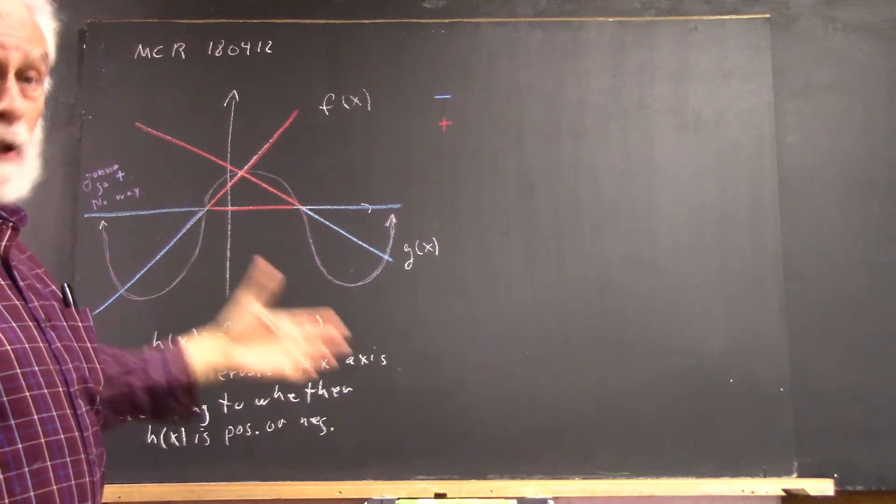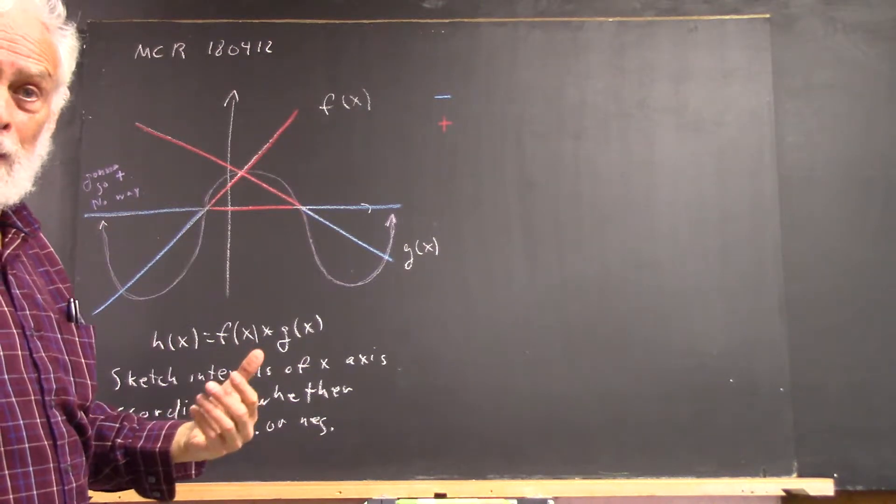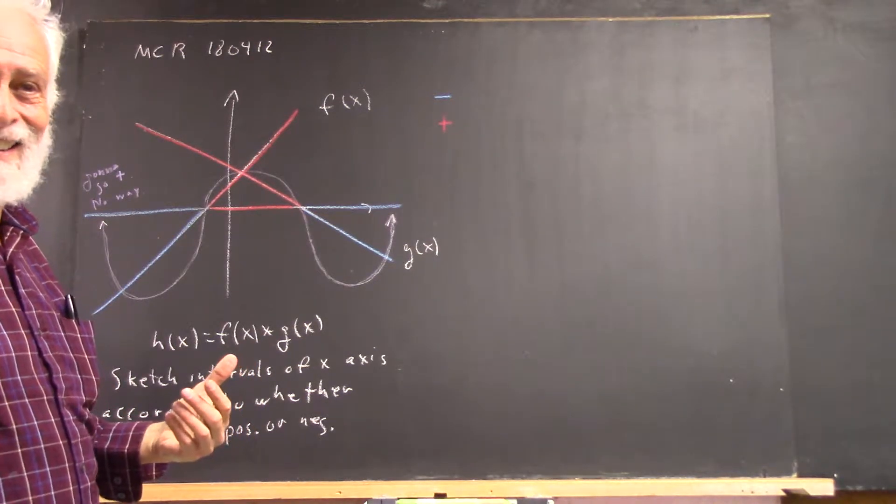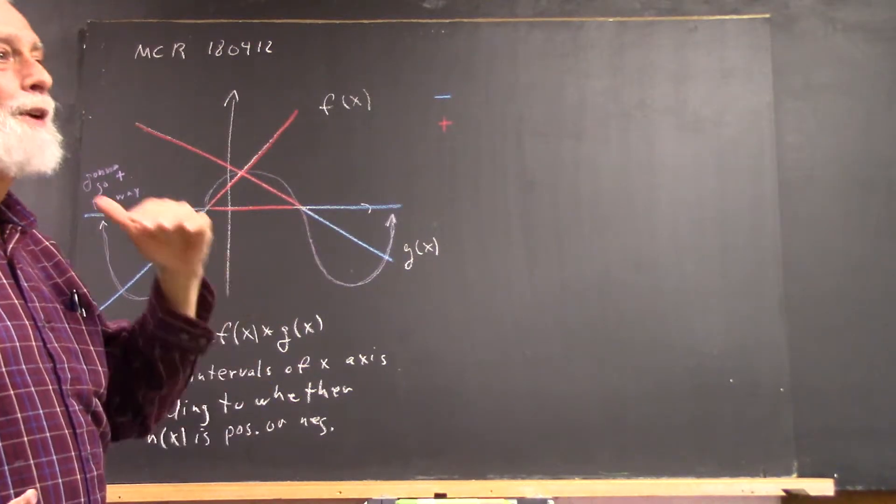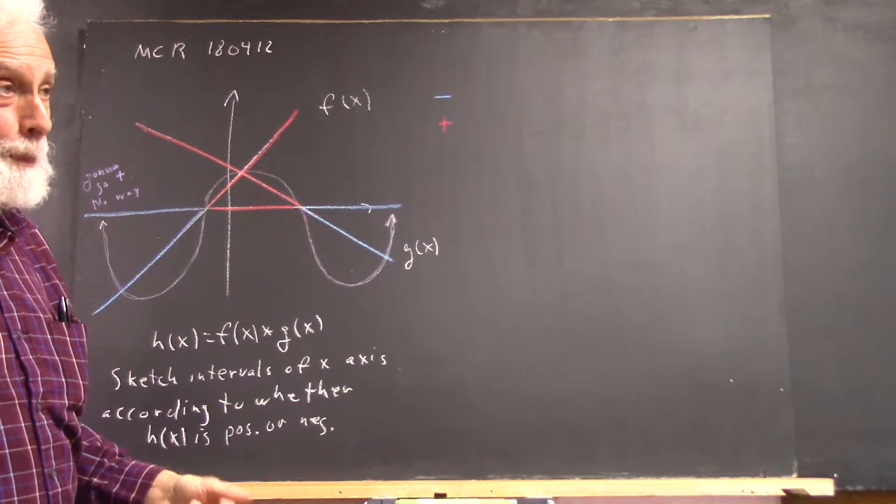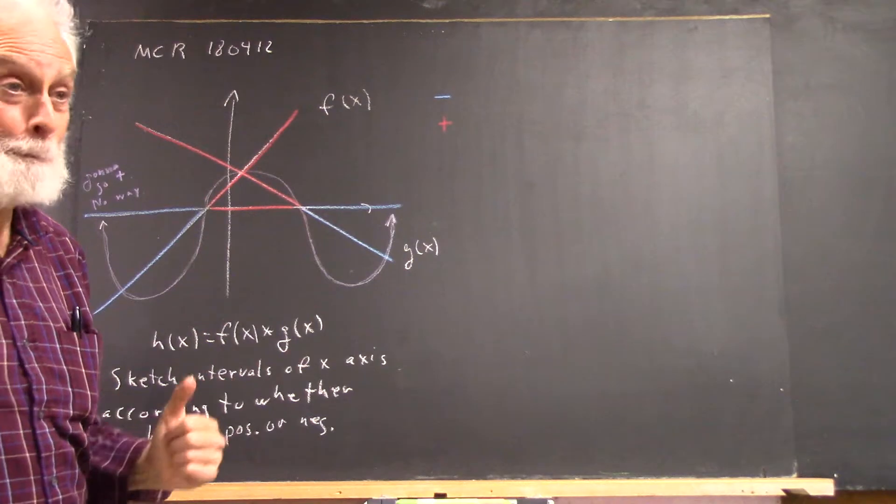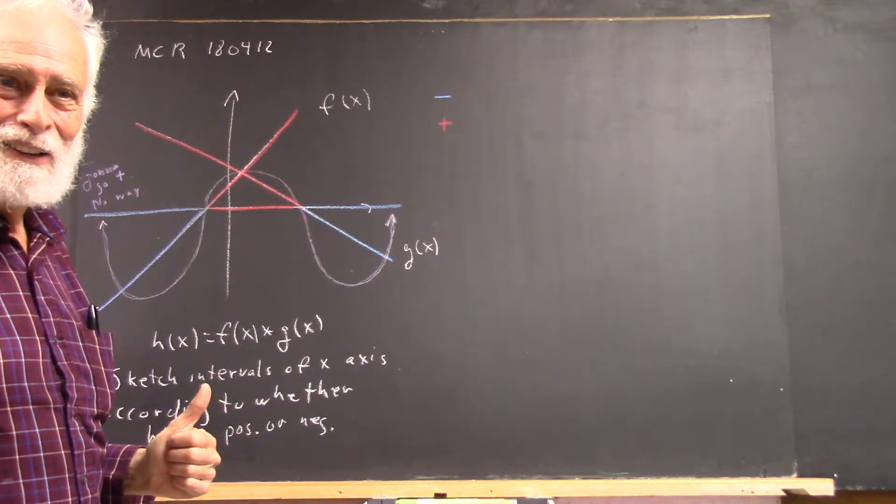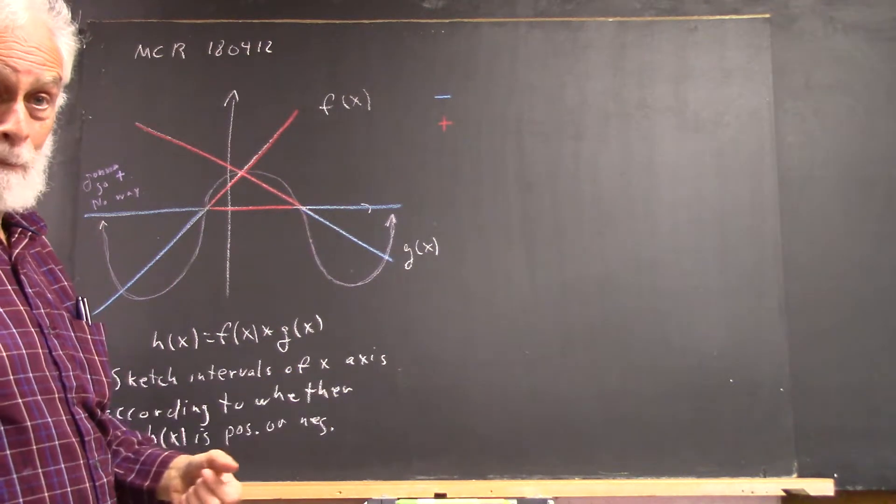If they're both getting bigger, when you multiply them, the result's getting biggerer, right? If you multiply a number that's not getting bigger by a number that's getting bigger, it gets bigger. So if you multiply a number that's getting bigger by a number that's getting bigger, it gets biggerer. It means it gets big much faster and faster.